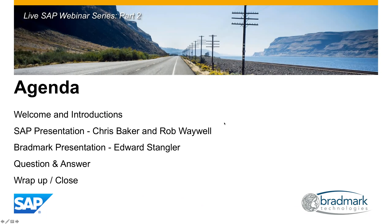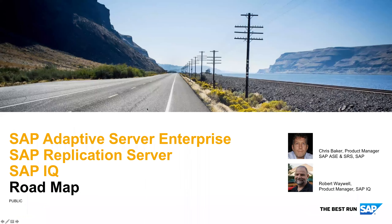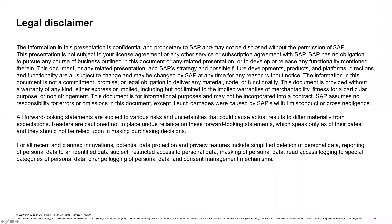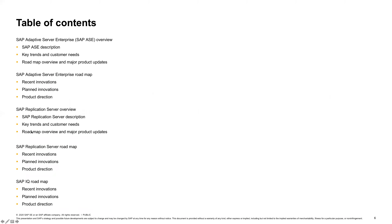Good afternoon, good evening to everybody, wherever you are. I hope everybody is safe. As part of this session, we're going to cover the roadmaps for ASC — SAP Adaptive Server Enterprise — SAP Replication Server, and SAP IQ. There is a normal legal disclaimer; this is a roadmap presentation which is subject to change, and we will be proceeding with what has been published already with a couple of changes. Today we'll cover the ASC roadmap overview — what ASC is, what it can do already — as well as the Replication Server roadmap and the IQ roadmap.